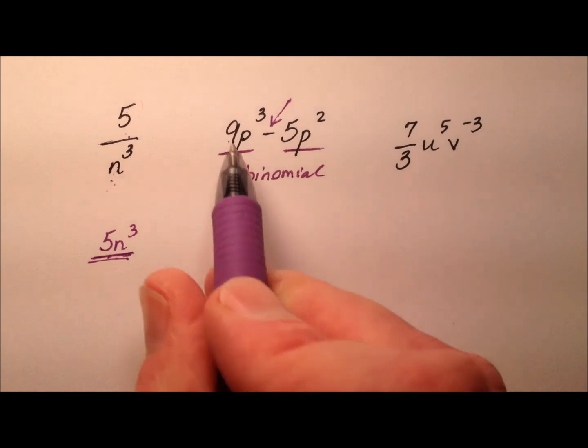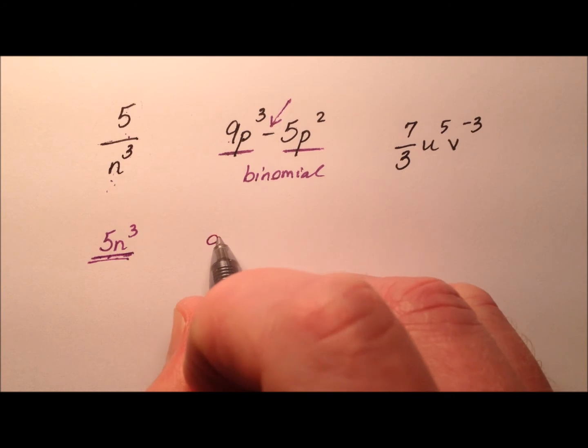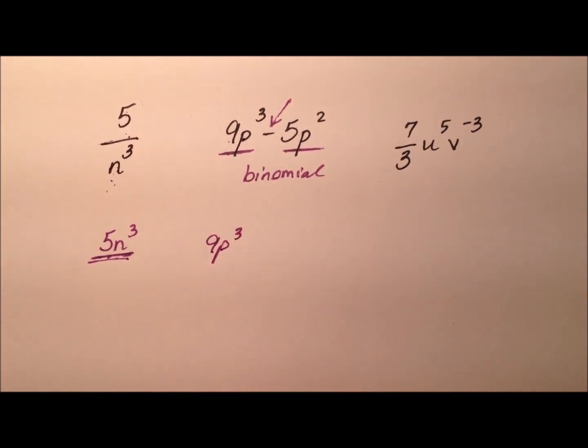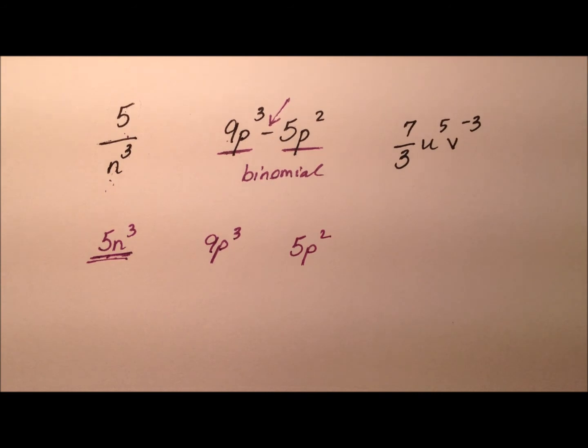If, however, we were to break them up or to multiply them, we would have two different monomials if we broke them up. So 9p cubed, that's a monomial. 5p squared, that's a monomial, but you just can't be adding and subtracting because that is no longer a monomial.